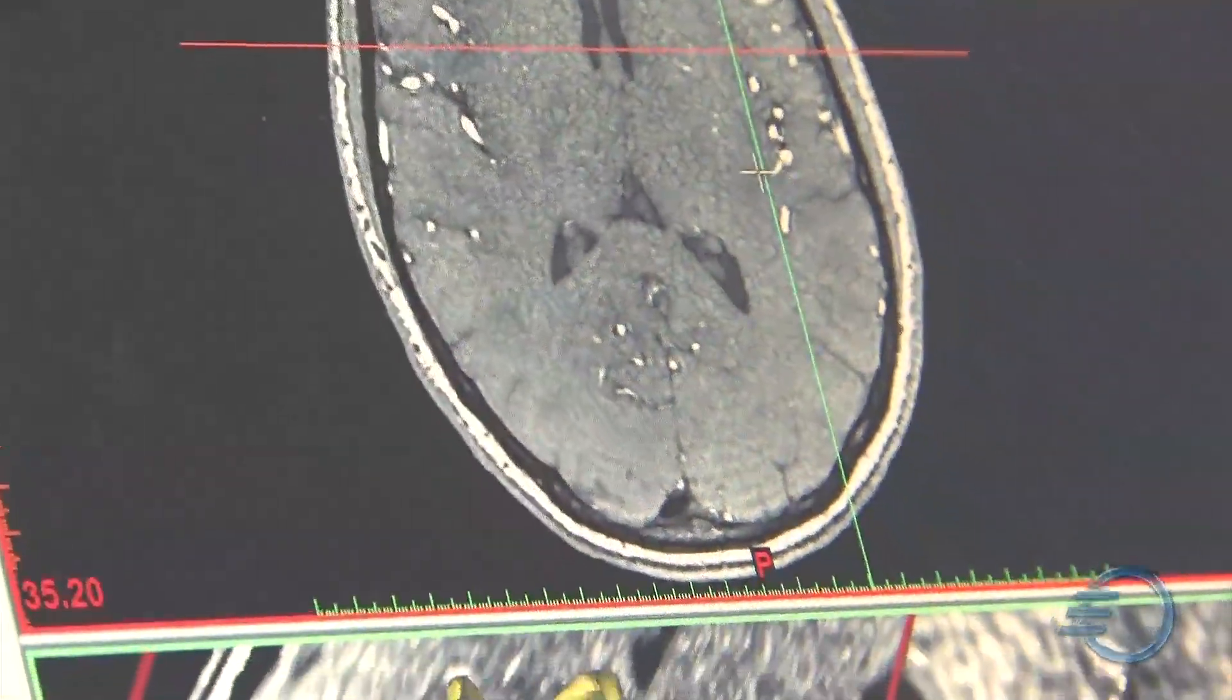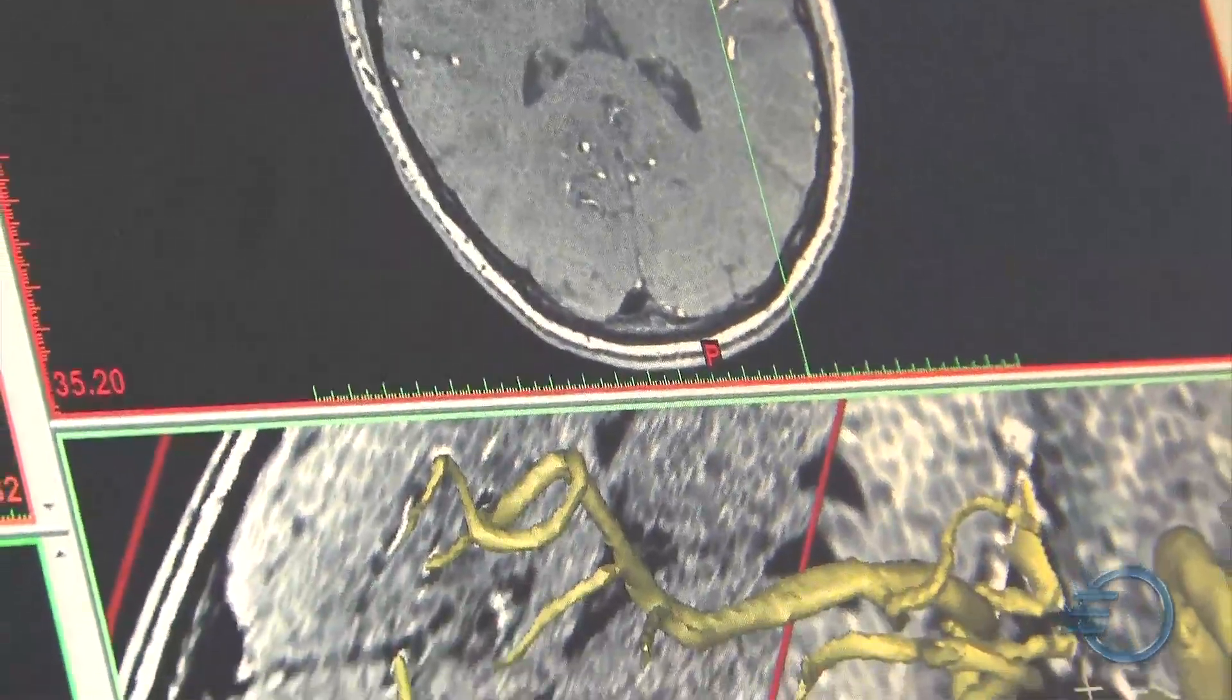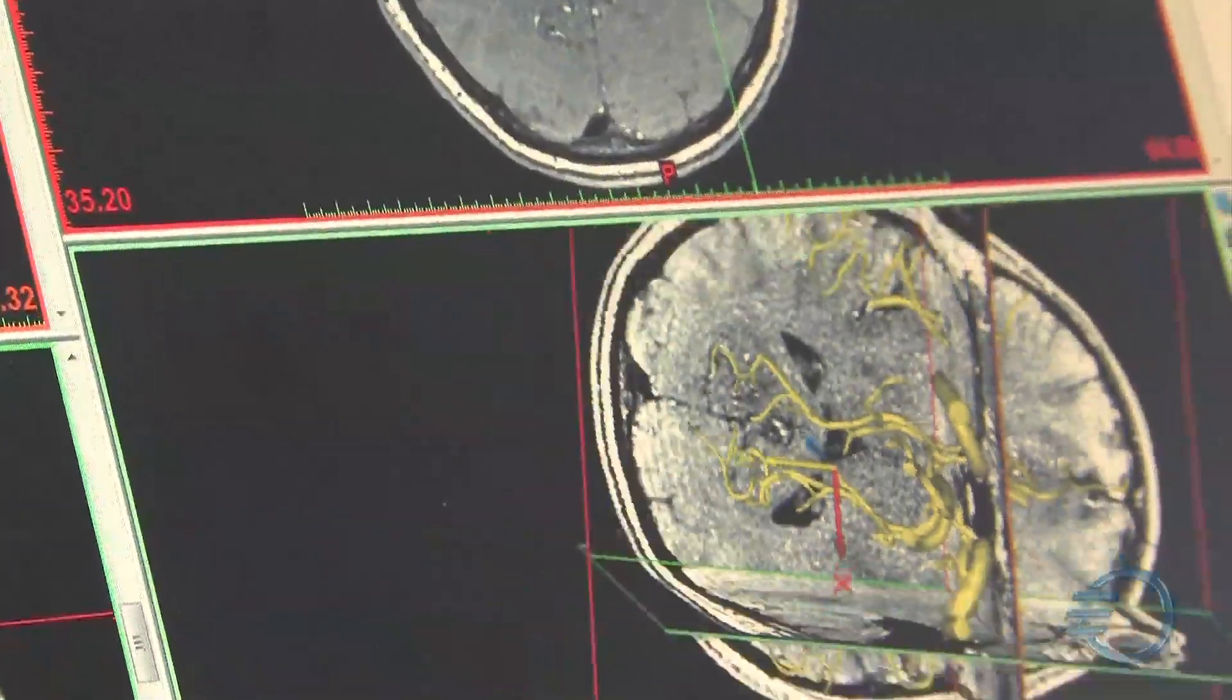When there is a problem, when an aneurysm does develop and sometimes eventually burst, then the outcomes are usually catastrophic. The mortality rates are on the order of 50 percent in the first few days. Overall, ruptured cerebral aneurysms specifically cause about 20,000 deaths each year in the United States.